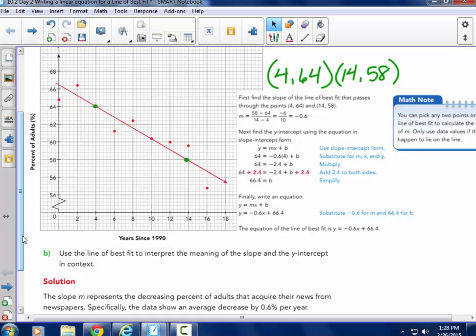So the slope is negative 6 tenths, or negative 0.6. Next, find the y-intercept using the equation in slope-intercept form. So I have one of the points, and they chose the point 4, 64. So put the y in as 64, and negative 6 tenths m, my slope, putting that into the formula. Put my y value in, put my slope in, put my x value in. And you can see they go ahead and solve it, and you get 66.4, which is this point up here on the y-axis.